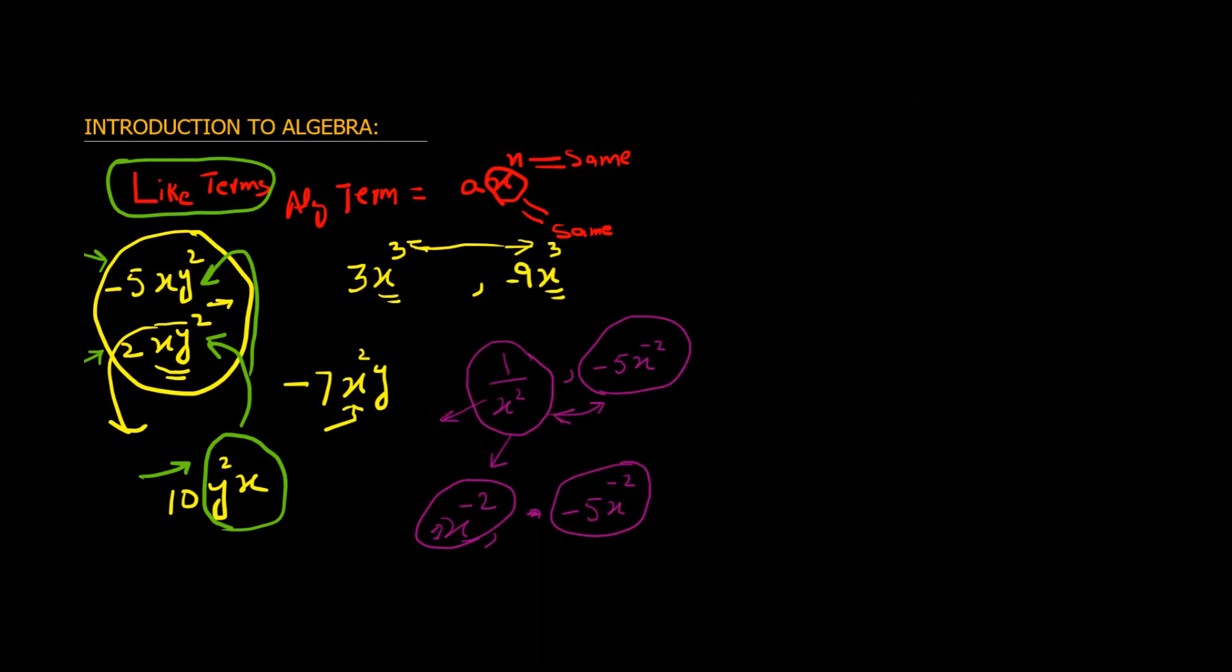So if we have minus 5x square y plus 3x square y, we can add these two terms together because they have the same base and exponent part. They only differ in coefficient.